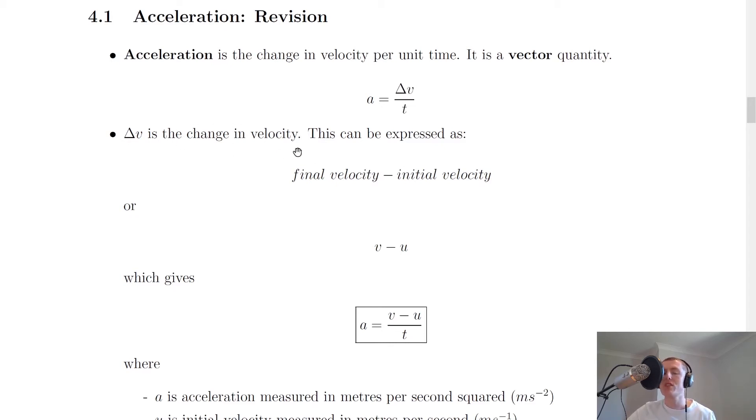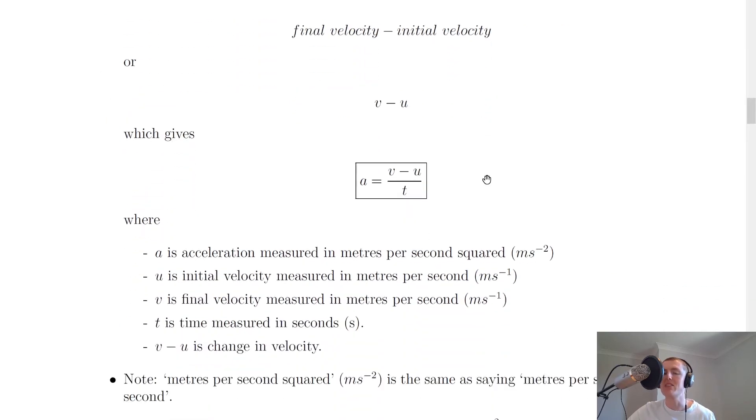And this change in velocity delta v can be expressed in the form of final velocity minus initial velocity. But we have symbols for those, remember, and the symbols are v minus u. So the symbol for initial velocity is u, and the symbol for final velocity is v.